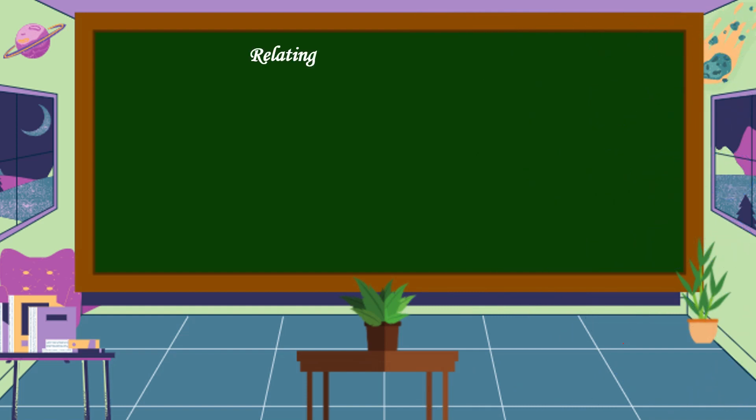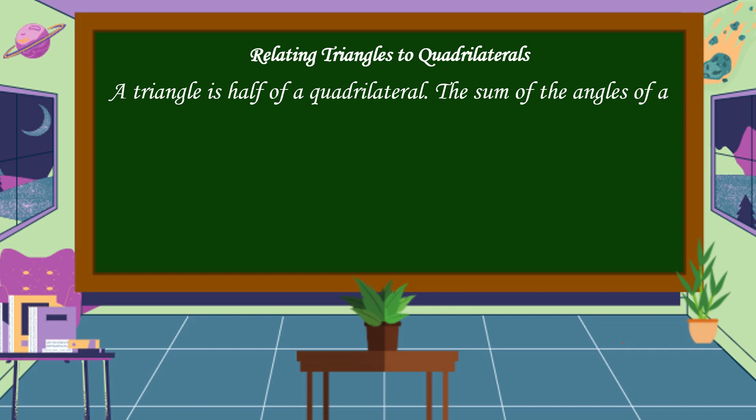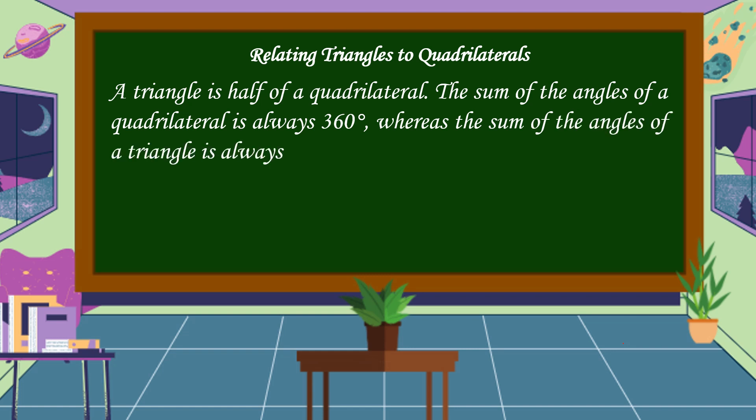Another relationship between triangles to quadrilaterals: A triangle is half of a quadrilateral. The sum of the angles of a quadrilateral is always 360 degrees, whereas the sum of the angles of a triangle is always 180 degrees.